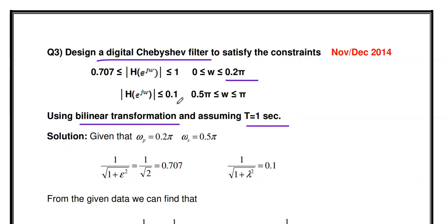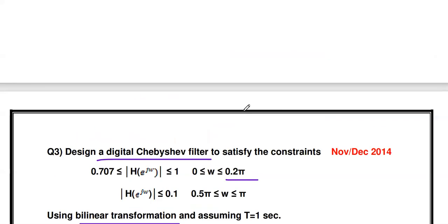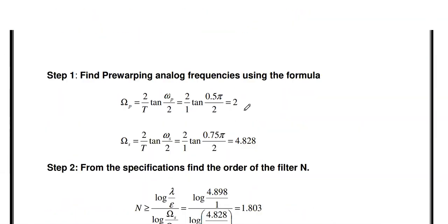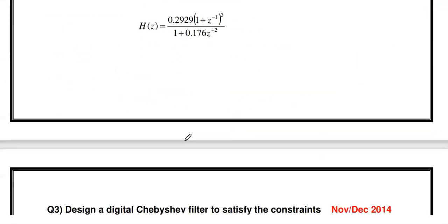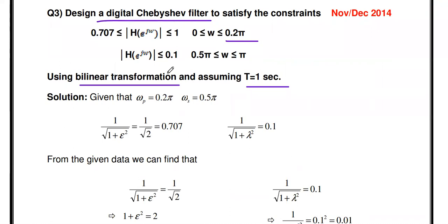Similar to this specification, we already solved the second problem, but in that method the question was digital Butterworth filter design. Here only the passband frequency and stopband frequency are different — here 0.2π and 0.5π rather than 0.25π and 0.75π. The passband gain and stopband gain are also different, but the method is the same. In the previous question we designed a digital Butterworth filter; here we solve the Chebyshev filter using bilinear transformation.